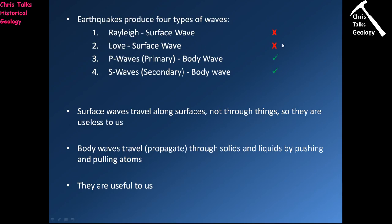Rayleigh waves and Love waves are both surface waves — they move across the surface of the Earth. Those are the ones that are actually damaging during an earthquake, making your building go up and down and shake from side to side. P waves and S waves are body waves, so they actually move through the Earth's interior. P wave stands for primary wave; S wave stands for secondary wave.